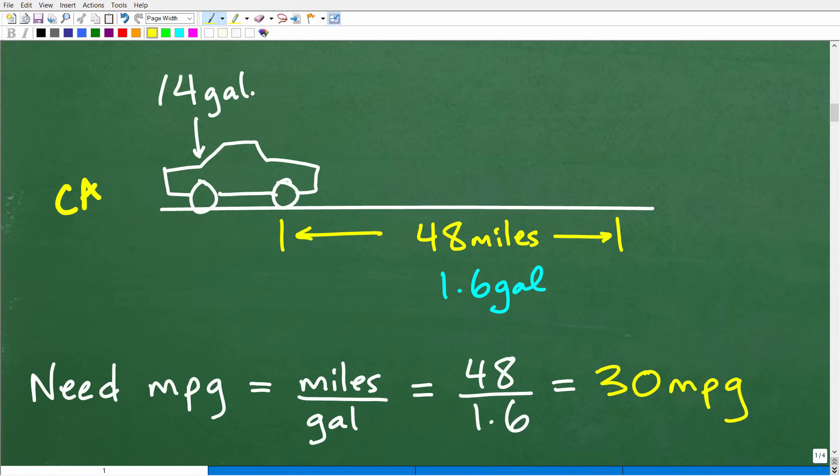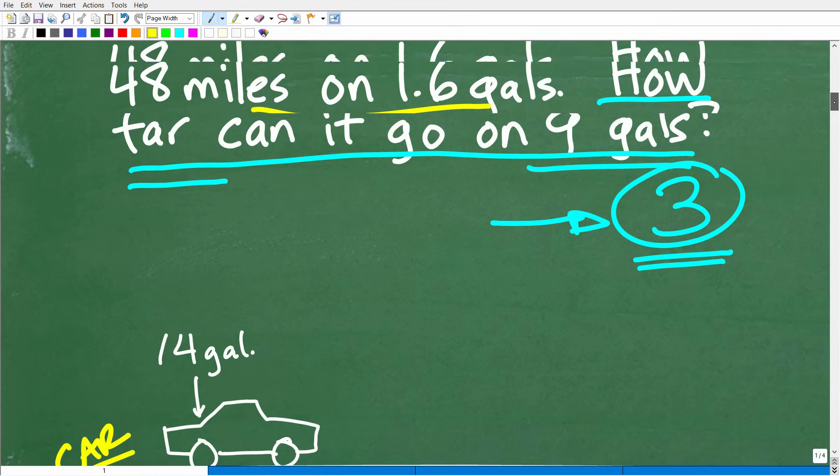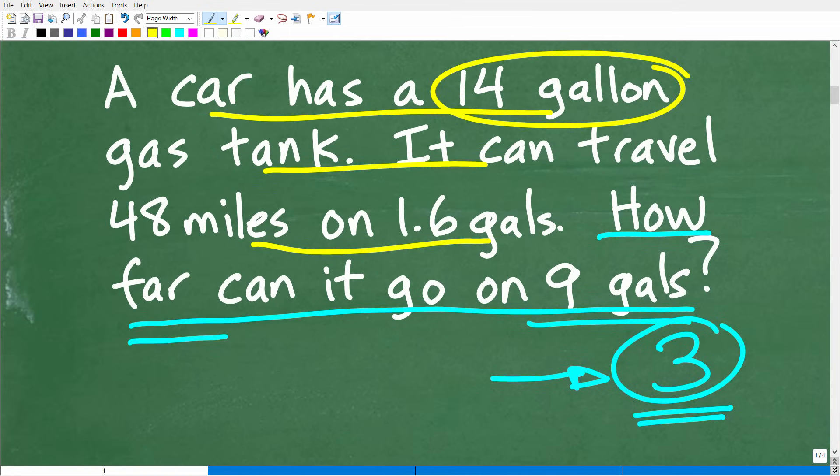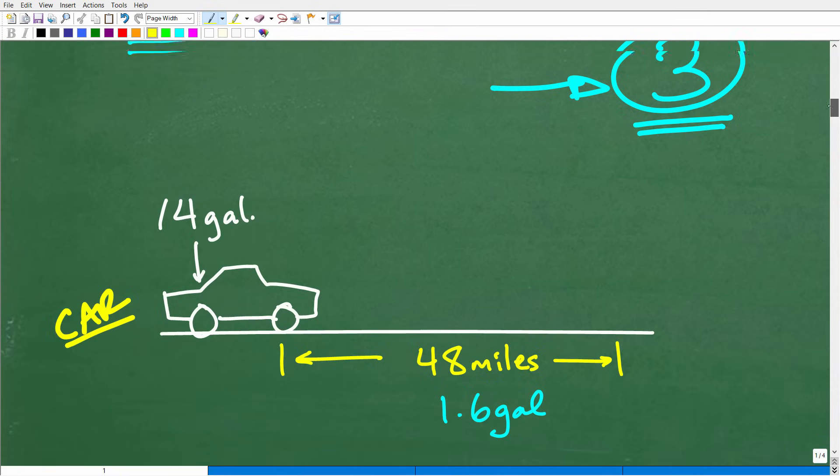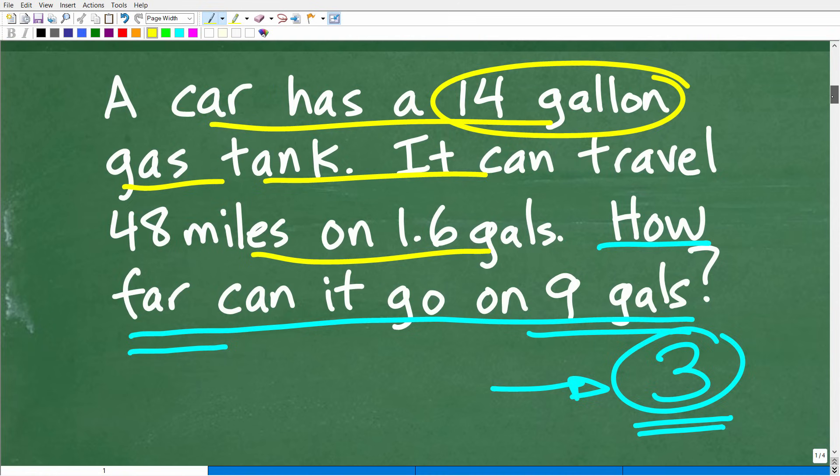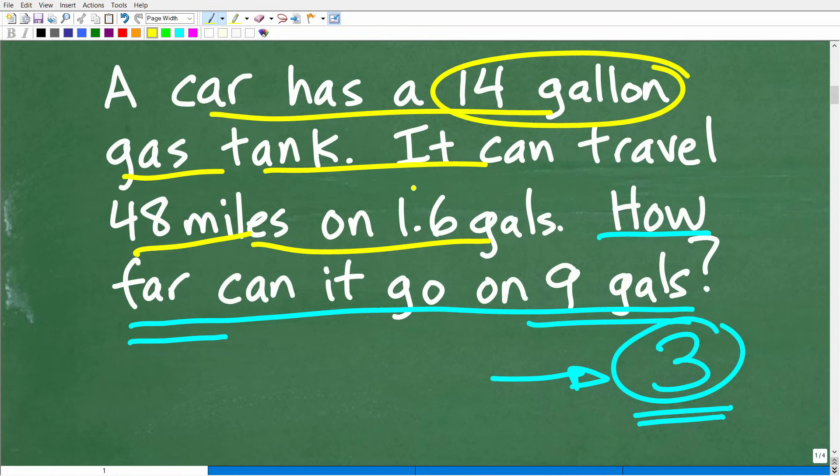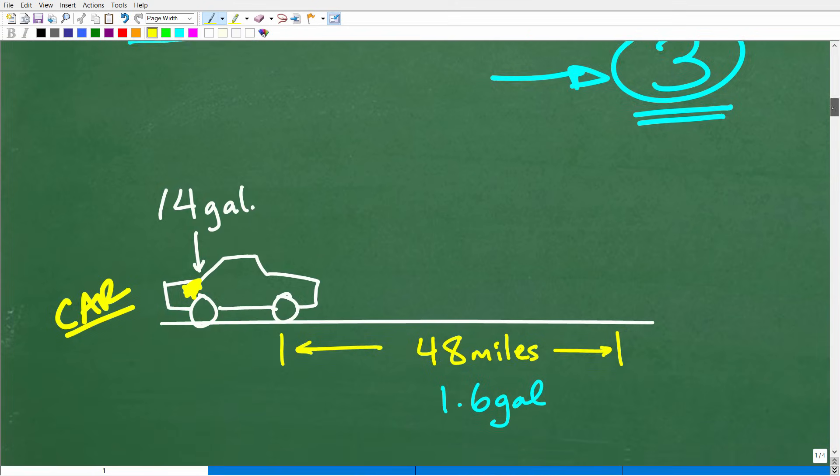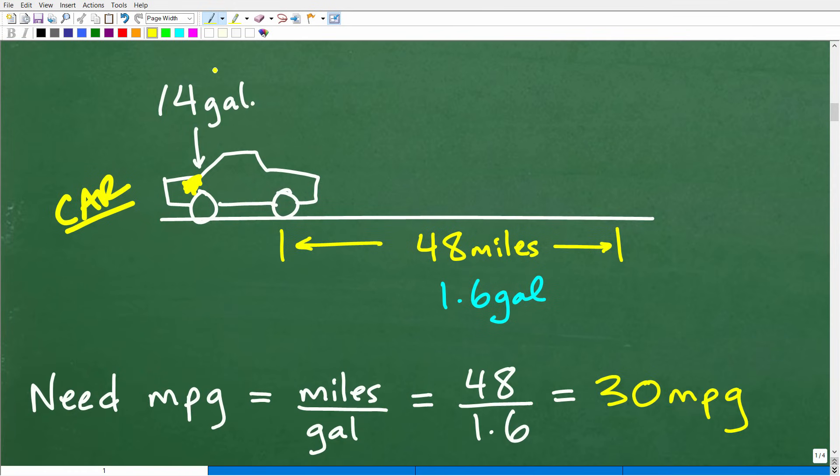So if you can kind of model or kind of come up with a quick sketch, oftentimes when you can kind of see the problem, you can kind of also see the solution. So let's go ahead and come up with a quick sketch. Of course, it just gives us an opportunity to practice a little basic art skills here. So we have this car and this is my idea of a car. And let's go back to the problem here. It has a 14 gallon gas tank. Okay. So it has 14 gallon gas tank. So let's say this is the gas tank right there. And it can go 48 miles on 1.6 gallons.